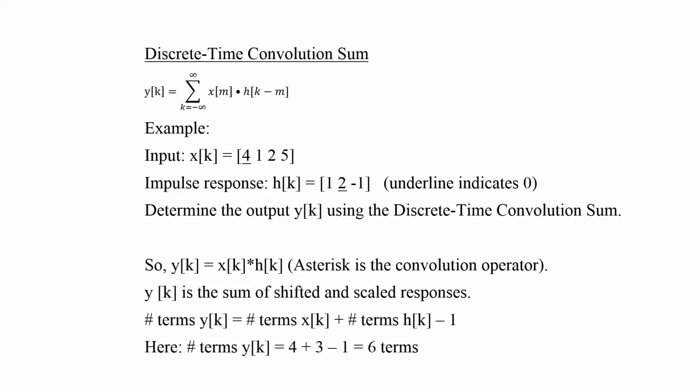For our example, we have an input here. X of k is equal to 4, 1, 2, 5. So the underline here, as I have stated, indicates the zero. So that's going to be x of 0 is going to be equal to 4. And the impulse response is h of k is equal to 1, 2, negative 1. The zero here being 2, so h of 0 will be 2.